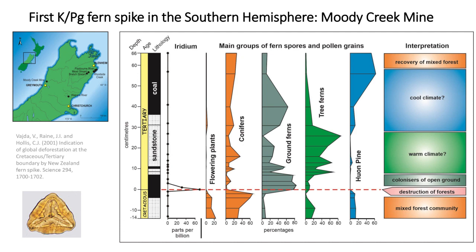Not to overlook the non-marine record of the KT boundary — work by Vivi Vajda, Ian Raine, and myself showed we got the iridium anomaly and a dramatic change in vegetation right at the boundary: a change from mixed forest to dominance of ground ferns, then appearance of tree ferns, then gradually conifer-dominated, with lots of Huon pine before the mixed forest comes back.